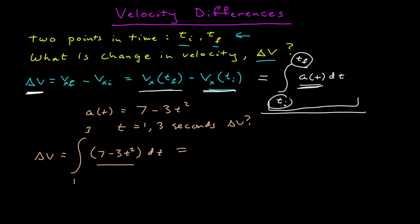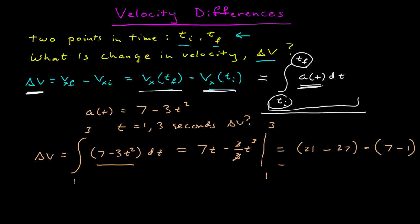This is a polynomial, so the indefinite integral gives us 7t minus 3t cubed divided by 3, evaluated at 1 and 3. The 3's cancel to give 1. So that's 21 minus 27, minus the quantity 7 minus 1, which gives us negative 6 minus 6, or negative 12 meters per second.